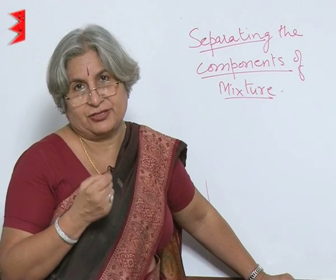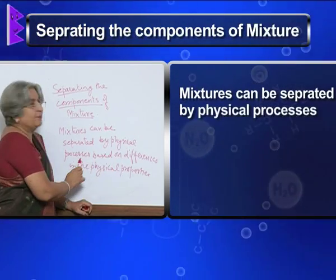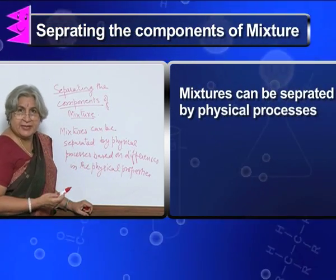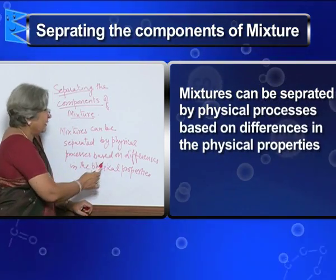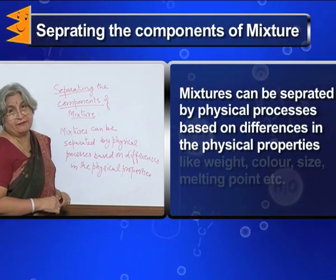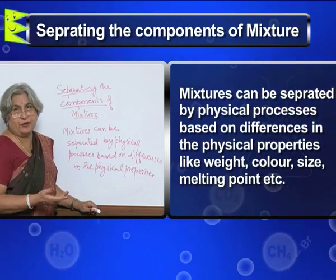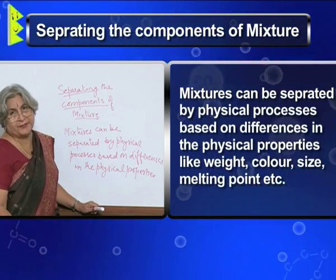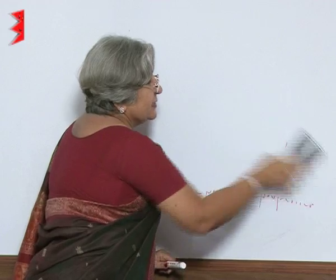By choosing a physical property difference, we can separate mixtures. Mixtures can be separated by physical processes, and the basis of those physical processes is differences in the physical properties — that could be difference in their weight, size, shape, color, melting point, boiling point, and so on.